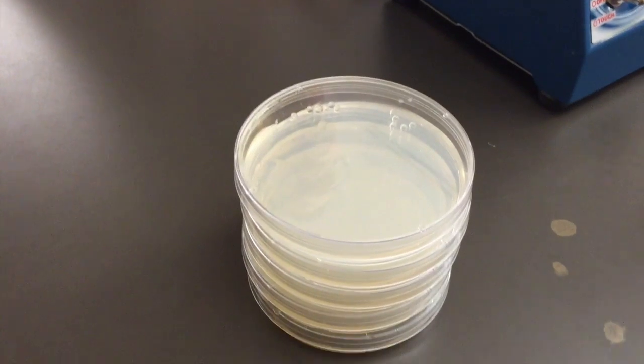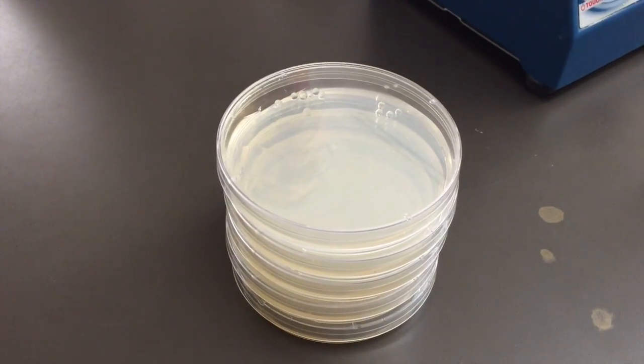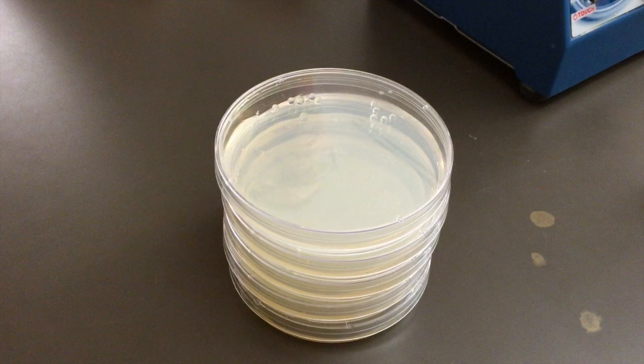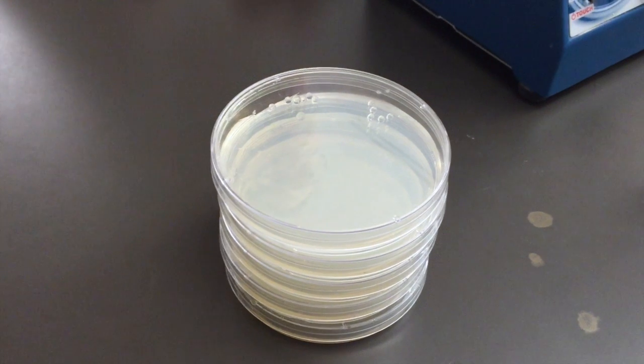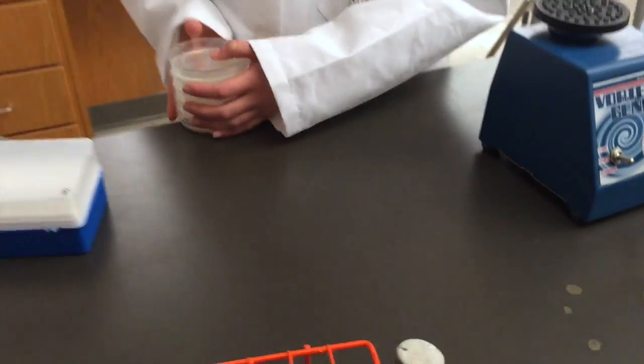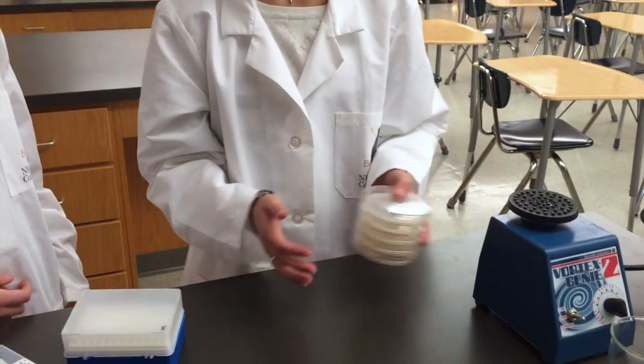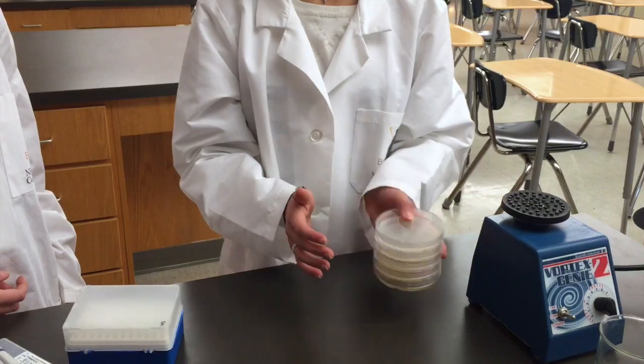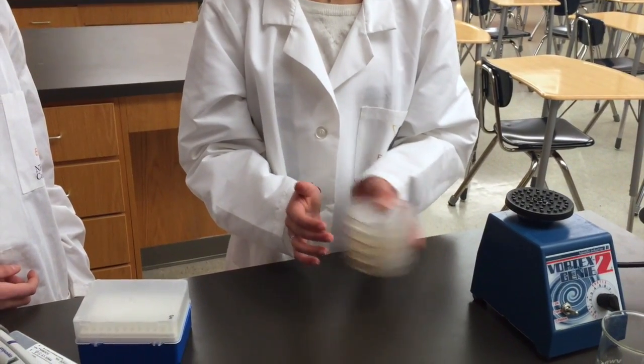You will notice that there are glass beads sitting on top of the agar. These will be used to spread out the bacterial culture so that you can see the individual colonies. Once the culture has been plated and the top of the plate has been put back on, hold the plate upright and shake it back and forth as shown here to allow the beads to spread the culture across the surface of the agar.